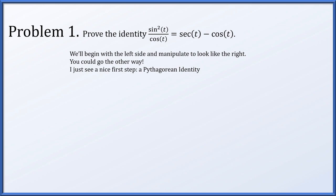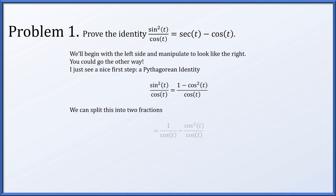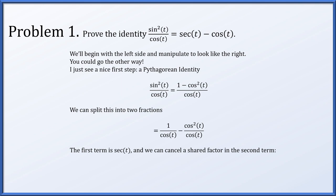If you did it differently and you think you're correct, by all means ask your instructor to evaluate your own proof. So we have sine squared t over cos t — the original left hand side. I'm going to replace sine squared t with 1 minus cosine squared t. Now we can split this into two fractions to get 1 over cosine t minus cosine squared t over cosine t. The first term by definition is secant of t, and in the second term we can cancel a shared factor. So we get secant t minus cosine t, which was the right hand side we desired.